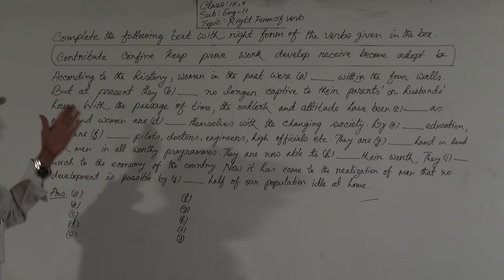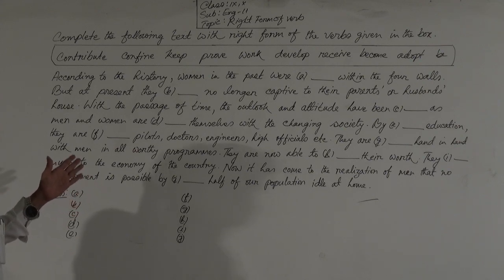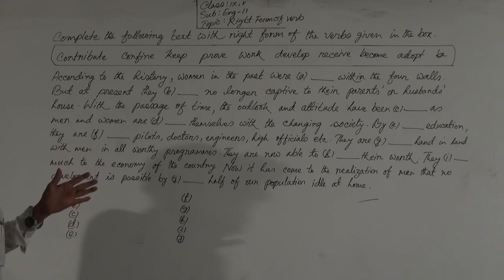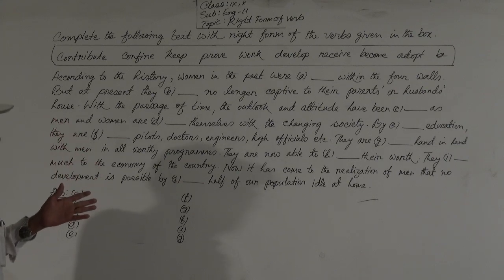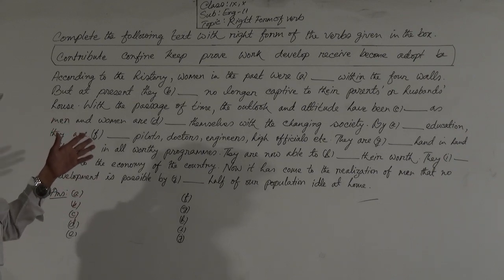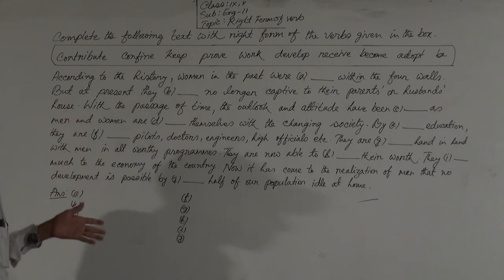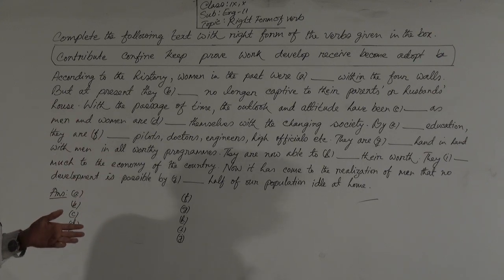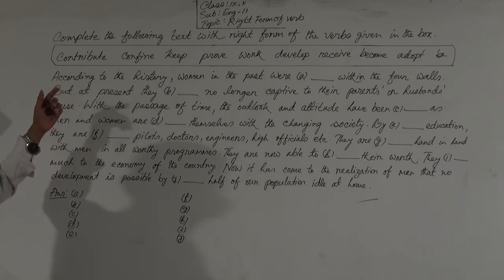There will be a passage with 10 gaps in the question, and there will also be 10 clue words to fill in the gaps. You have to use the right form of the verb to fill in the gaps. In this way you will get 10 words. Now see the clue verbs.